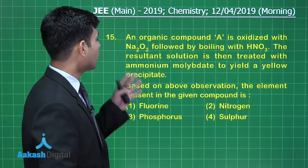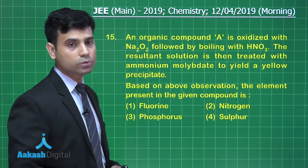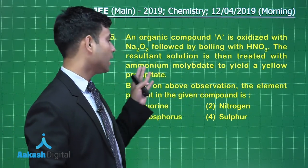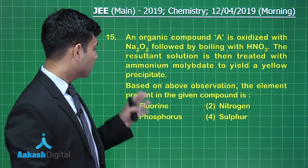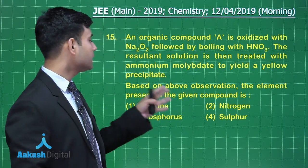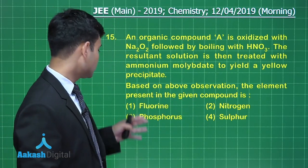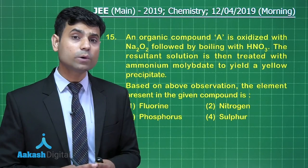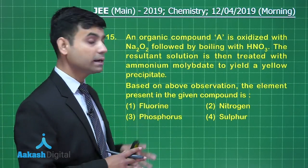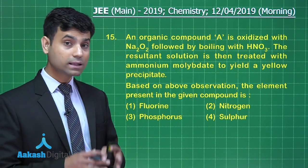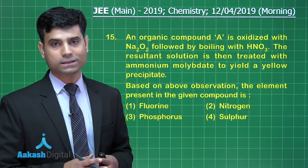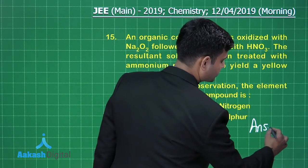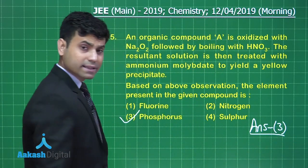This is the next question. It says: an organic compound A is oxidized with Na₂O₂ followed by boiling with HNO₃; the resultant solution is then treated with ammonium molybdate to yield a yellow precipitate. Based on this, which element is present? The options are fluorine, nitrogen, phosphorus, or sulfur. The yellow precipitate with ammonium molybdate is ammonium phosphomolybdate, hence the organic compound must contain phosphorus. Therefore the right answer is option 3.